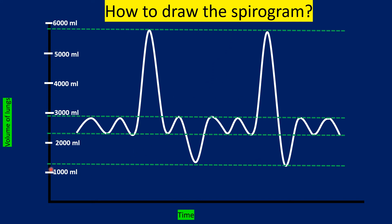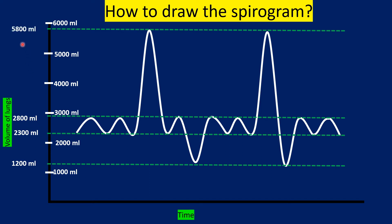To draw the spirogram, we'll have to draw four imaginary lines first. These imaginary lines are drawn such that on the y-axis we have drawn six divisions, and each division represents 1000 milliliters, so altogether up to 6000 milliliters or six liters. Each imaginary line starts at 1200 milliliters, then 2300 milliliters, then 2800 milliliters, and finally at 5800 milliliters.